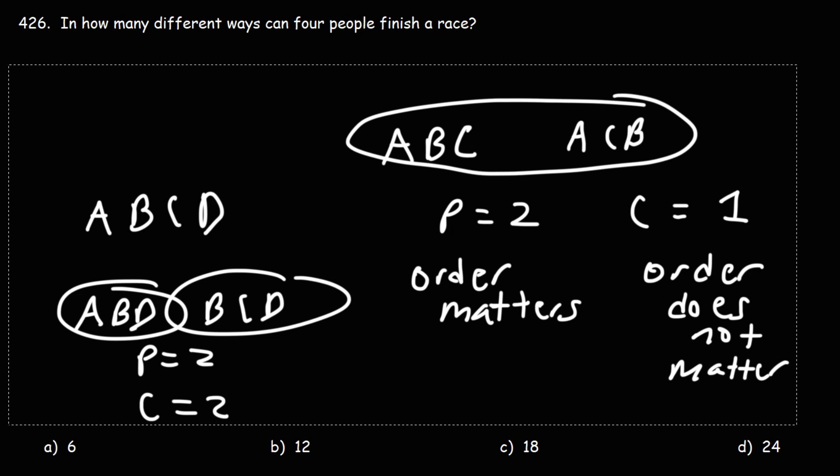When a question says 'in how many different ways,' that's a key phrase telling you you're dealing with a permutation problem. Usually when you see 'in how many different ways can you do this,' you're dealing with permutations where order matters. So for our question — in how many different ways can four people finish a race — all four will finish, and the only thing that differs is the order, so this is a permutation problem.